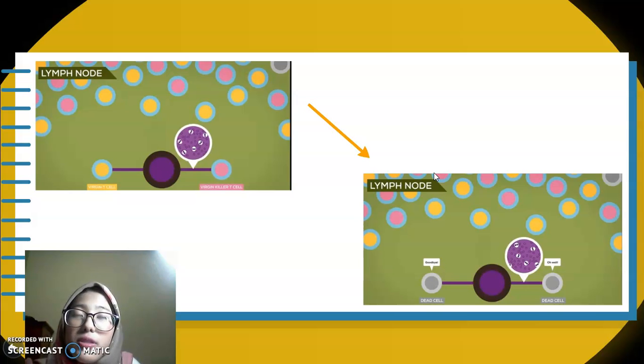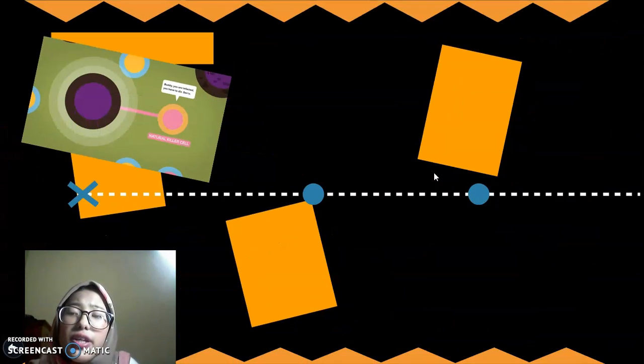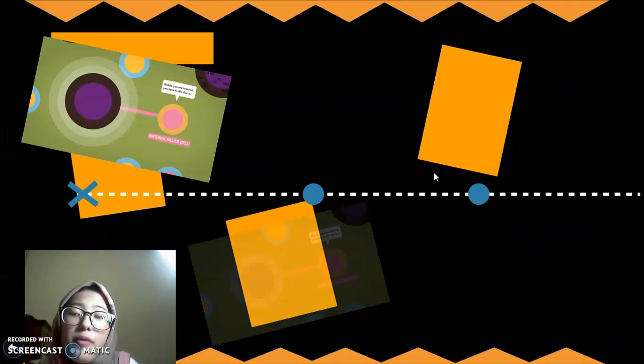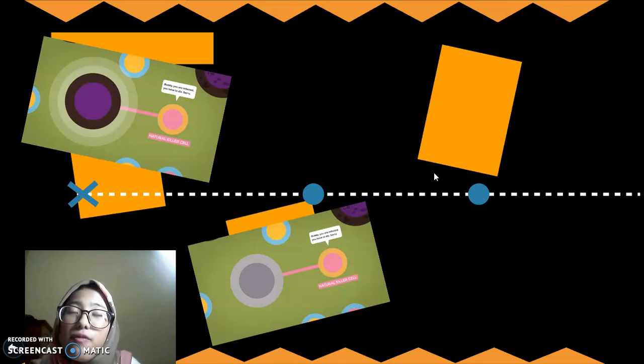When the virus rapidly multiplies, we're talking billions, there are cells that should deal with infected cells, the natural killer cells. But they also get infected and just die because they can't prevent the disease from spreading.